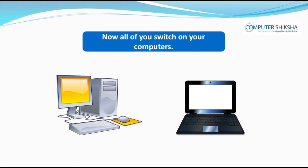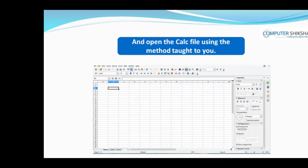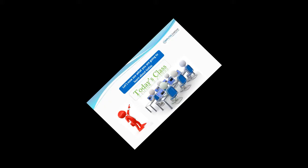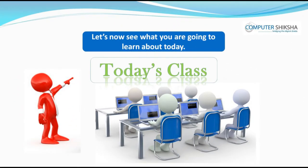Can you tell why the SQRT formula is used? SQRT will help you to get the square root value of any number. For example, if you give the number as 49, SQRT will give you its square root value as 7. Now switch on your computers and open the calc file using the method taught to you.